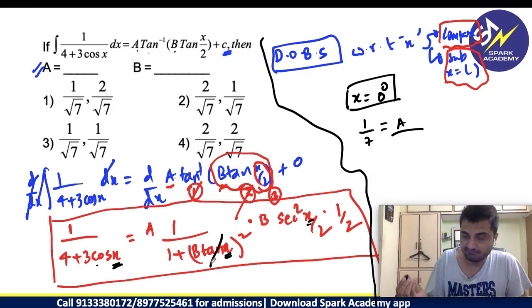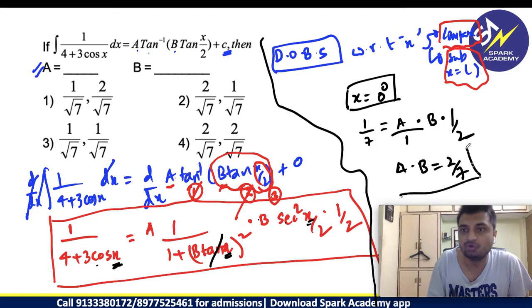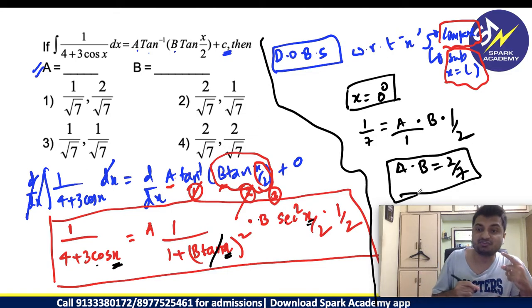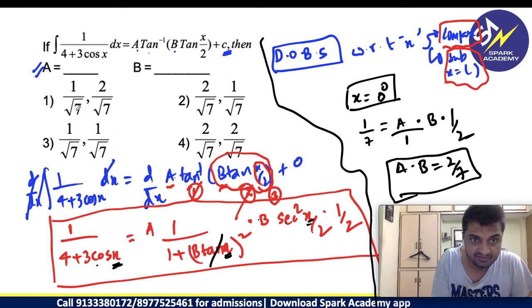Cos 0 will be 1. So, 1 by 4 plus 3 will be 1 by 7. That is equal to A as it is. Tan 0 is 0, so A by 1 only we will get, into B as it is. B is also as it is. Then secant square 0 is again 1 into 1 by 2 I am getting. Basically, what we need to get is A into B should be equal to 2 by 7. This is the expression we got.